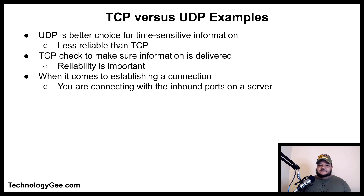In summary, each protocol serves a very unique purpose. UDP is the better choice for time-sensitive information even though it is less reliable than TCP. In situations where reliability is important, TCP is beneficial. Remember that it is the inbound ports you are connected with on a server.